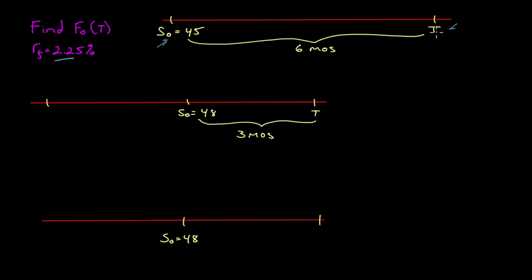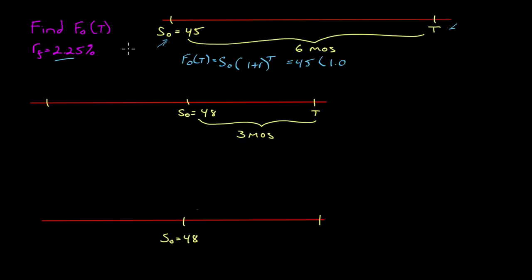What we want to do is determine what the price would be at that point in time. All we have to do is move this $45 forward in time six months. We take the underlying price S-naught and multiply by (1 + R) to the power of T. In doing so, I've just given you the formula for the forward price of any underlying with no income attached. So it's $45 × (1.0225)^0.5 and we get $45.503. This $45 is at this point in time; this $45.503 is six months from now.